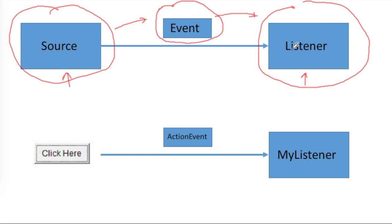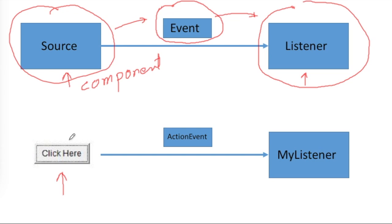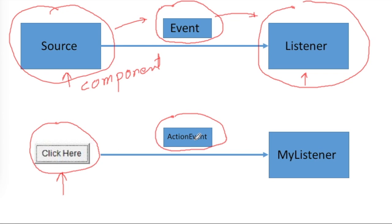As I explained in my previous video, a component will have properties, methods, and events — it will generate an event. The difference between an object and a component is that an object will have only properties and methods, while a component will also generate events. For example, a Java Button is a component. It generates an event called ActionEvent, so whenever a user clicks on the button an event is generated. We can define our own class whose object will handle this event.